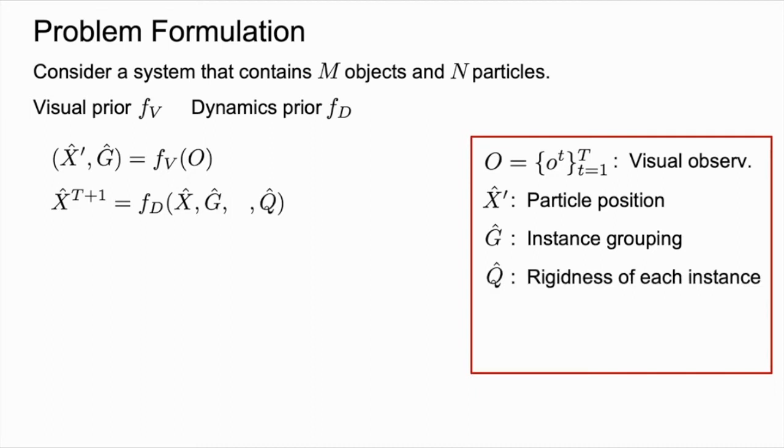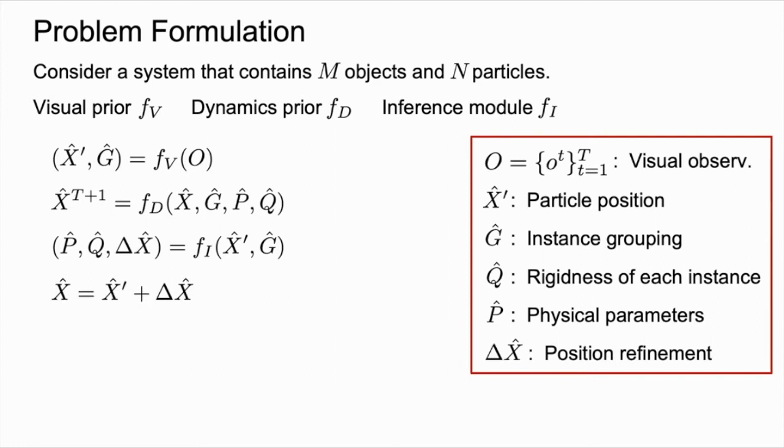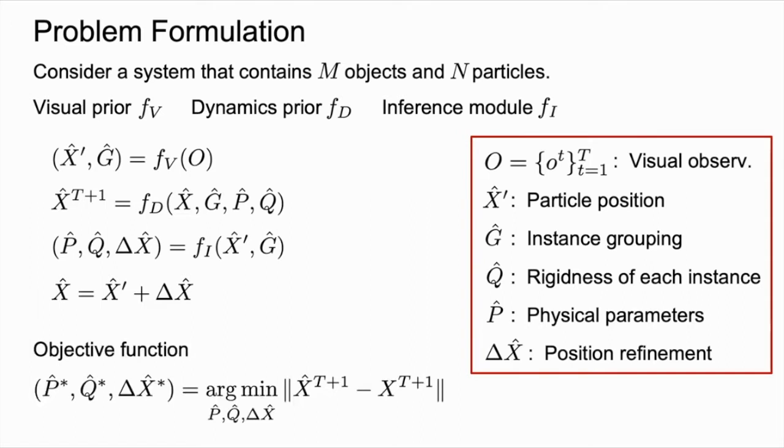These properties include the rigidness of each object instance Q-hat, and the environmental physical parameters P-hat. The reason for modeling the rigidness of the objects is because all particles belonging to a rigid object are subject to rigid motion, whereas we do not impose any constraints if a particle belongs to a deformable object. Both P and Q are inferred by an inference module F_I, which also generates an offset delta X-hat to refine the proposed particle locations, such that the dynamics model can explain the observation and predict the particle trajectories into the future. Our inference module F_I is tuned to minimize the following objective, which is subject to the constraints induced by the fixed visual and dynamics priors F_V and F_D.